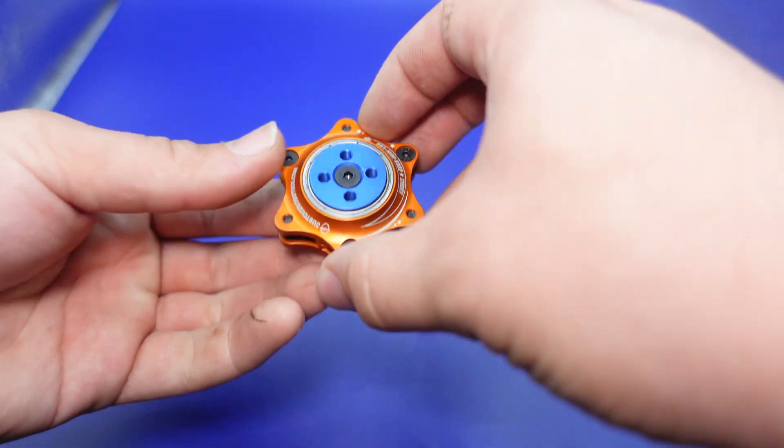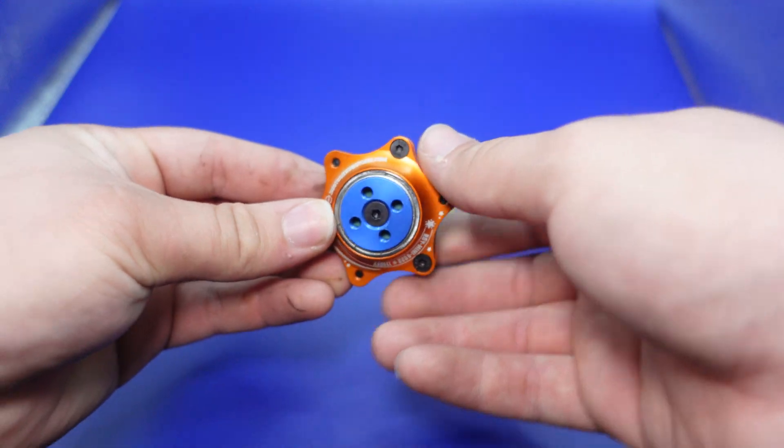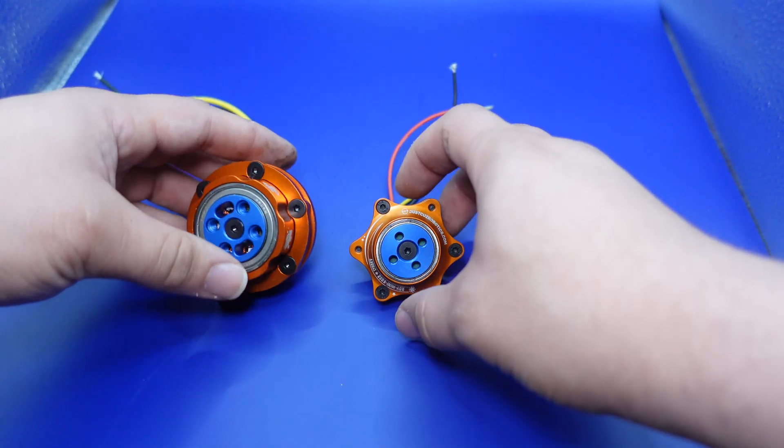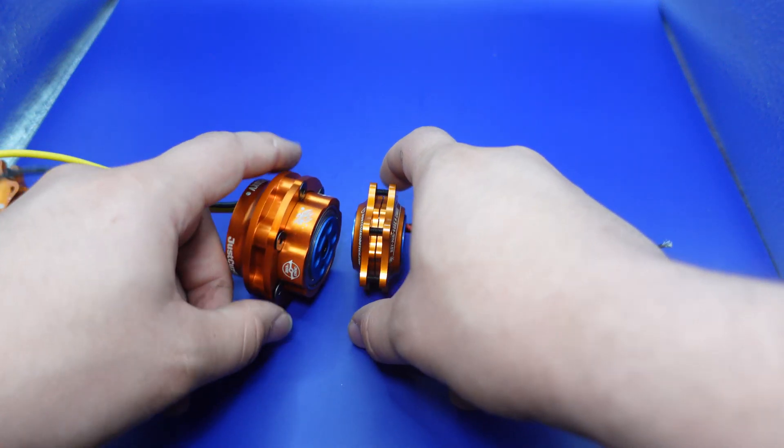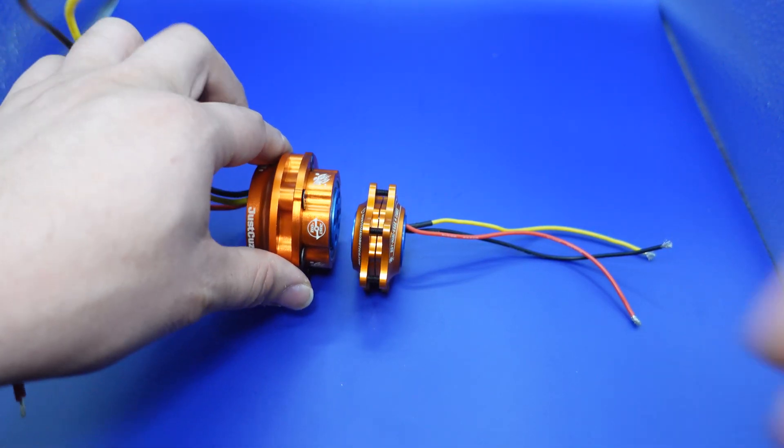So this is the hub motor itself. The way that this works, it's the same as the Beetleweight version. So this is the Antweight and the Beetleweight motors next to each other. As you can see, the Beetleweight motor is a lot thicker, but not a huge amount larger diameter.